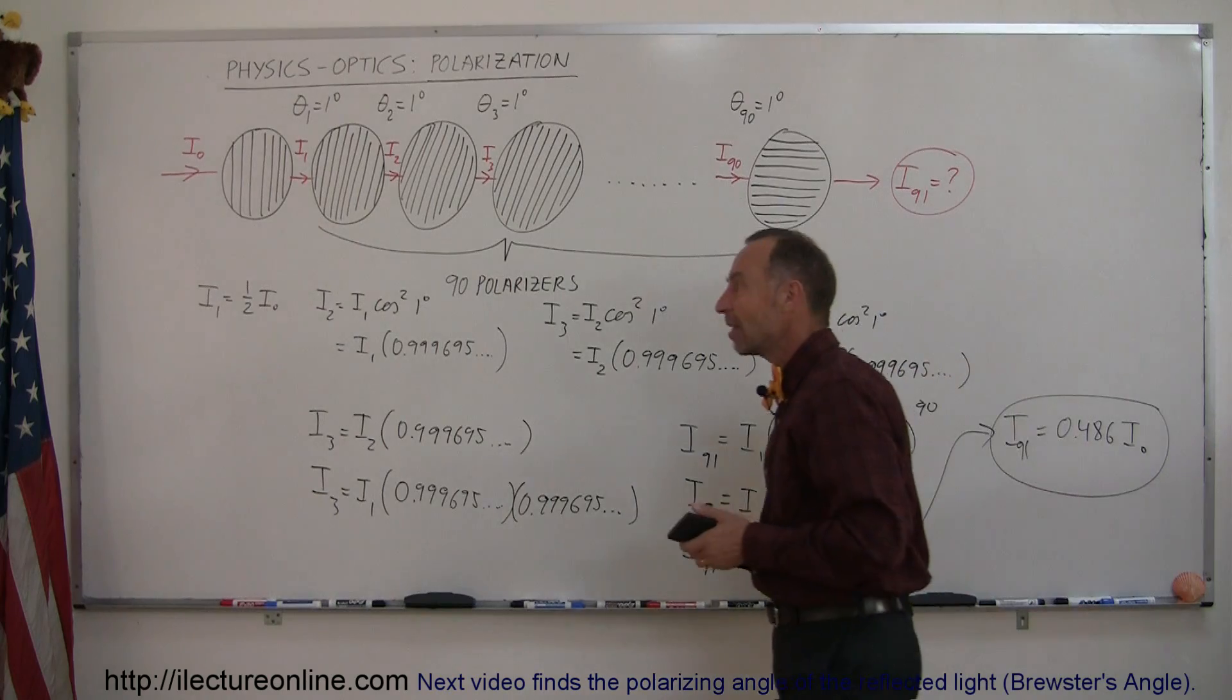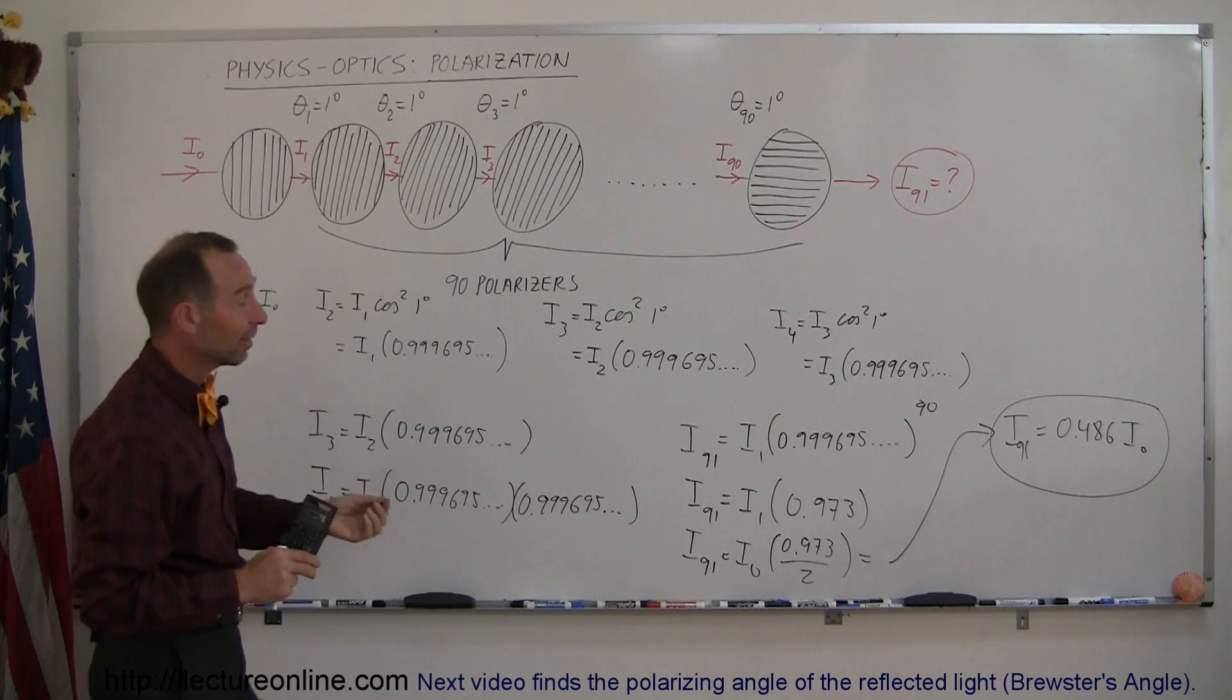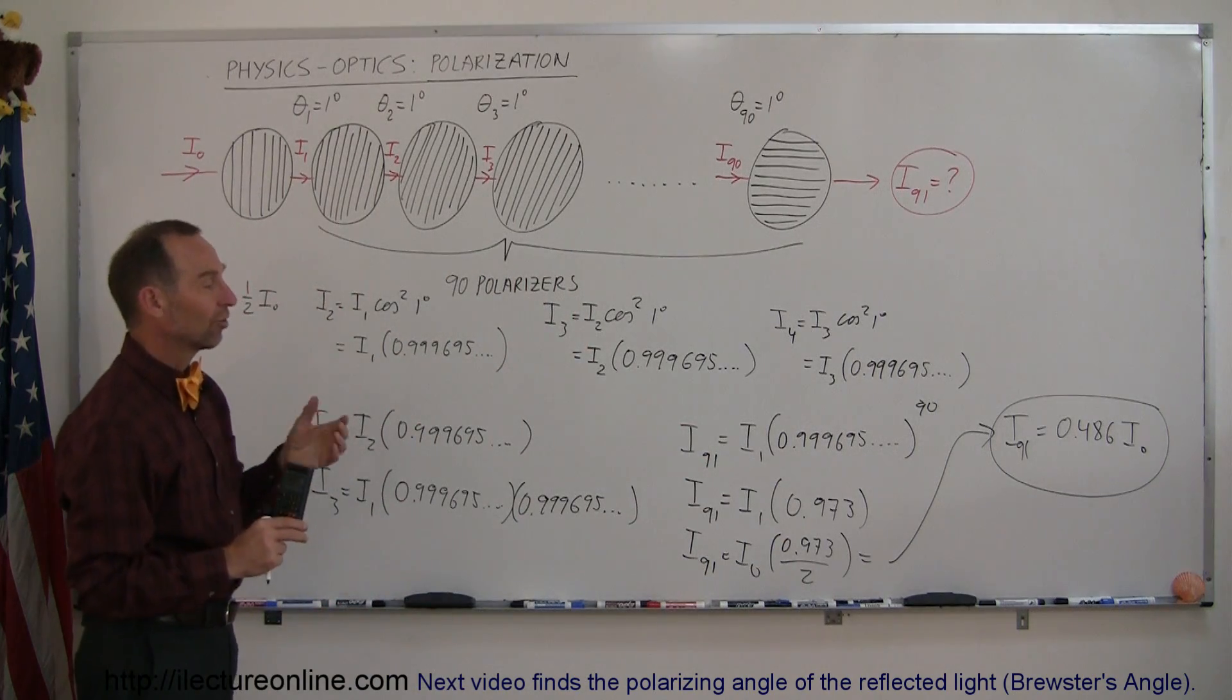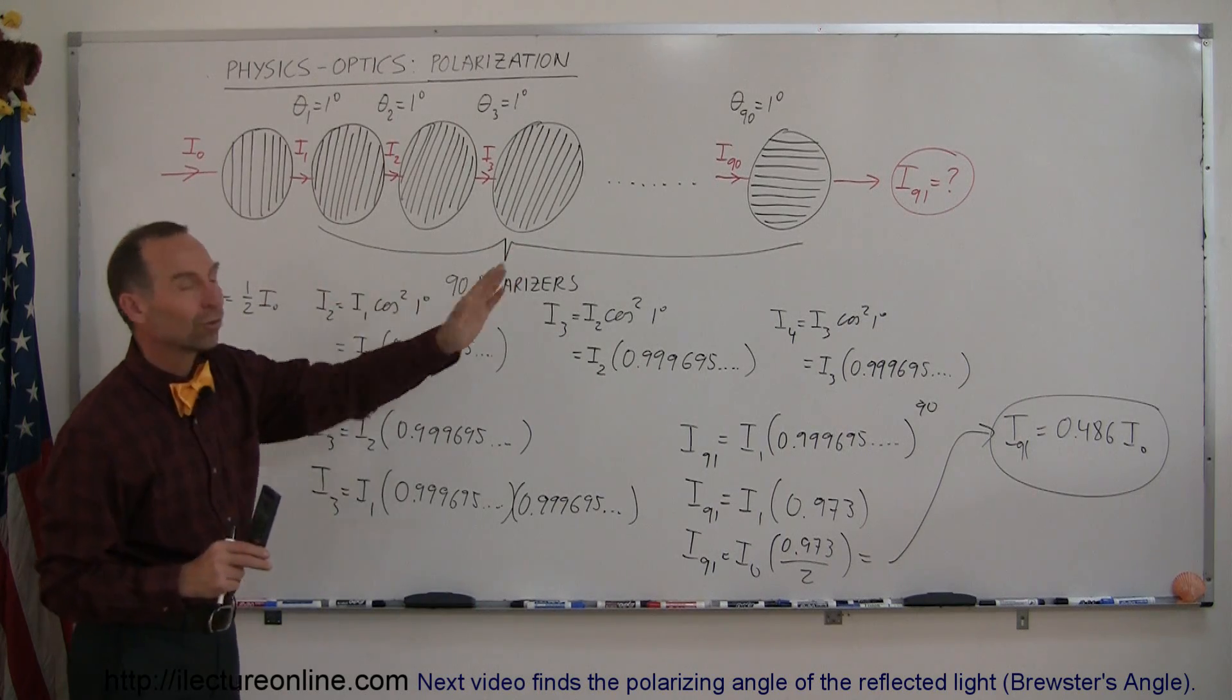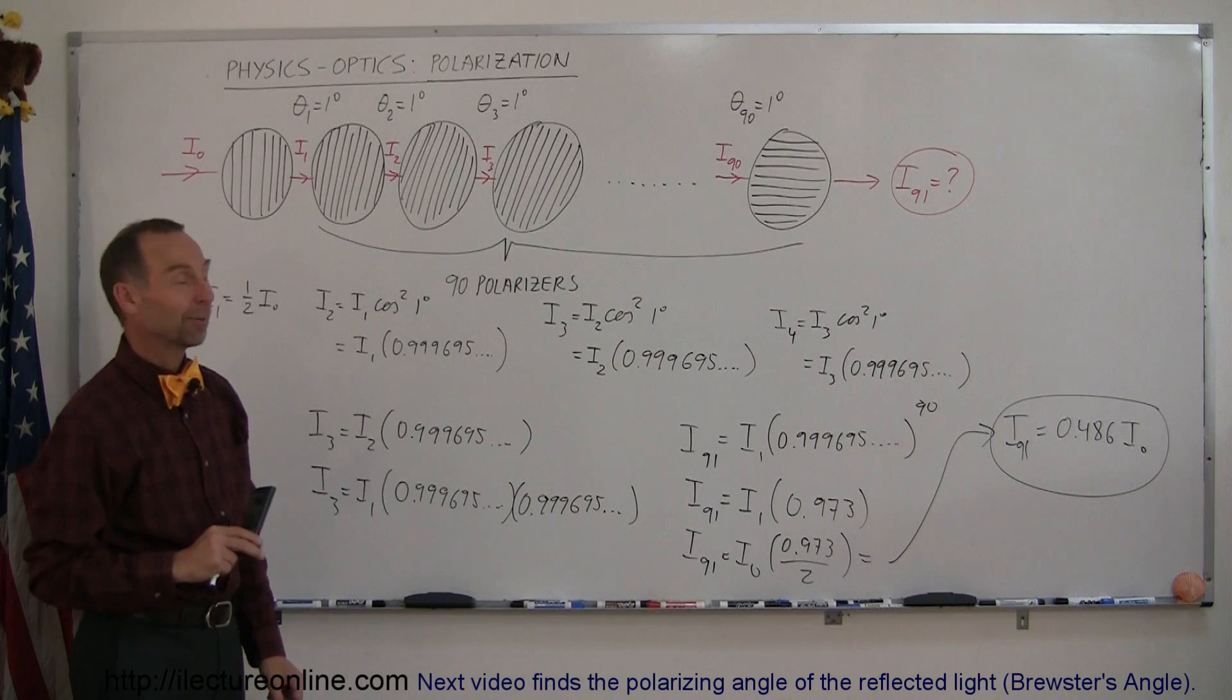And notice that the vast majority of intensity is lost by passing through the first polarizer where half the energy is lost. And after that just a small smidgen, only 3% of that energy is lost as it passed through the next 90 polarizers. And that's how you do a problem like that.